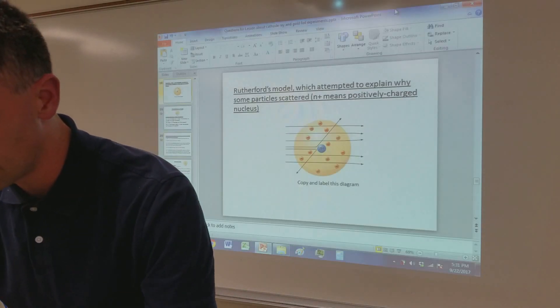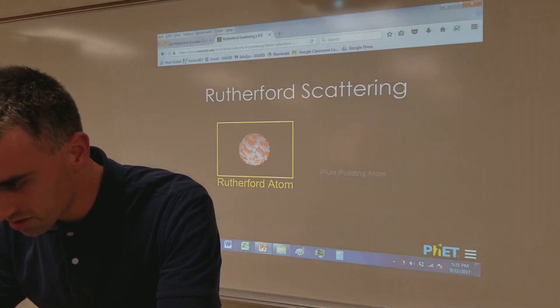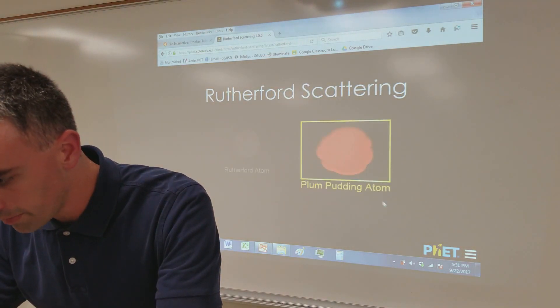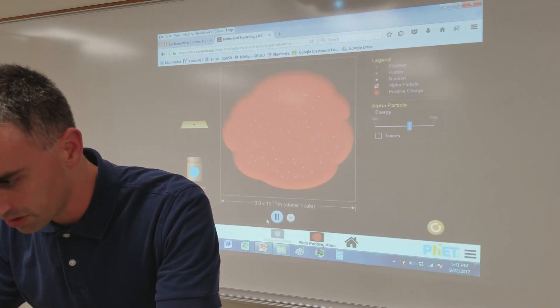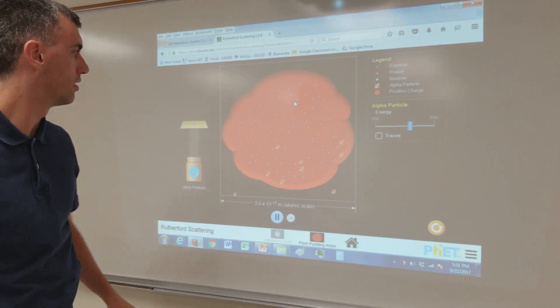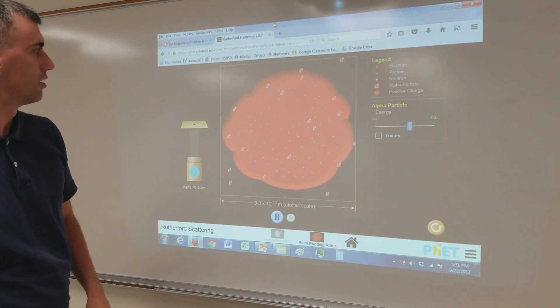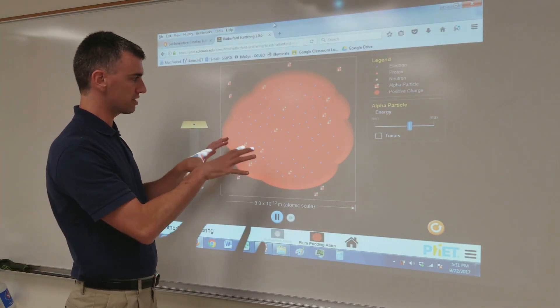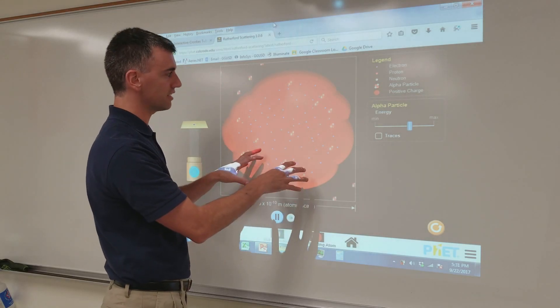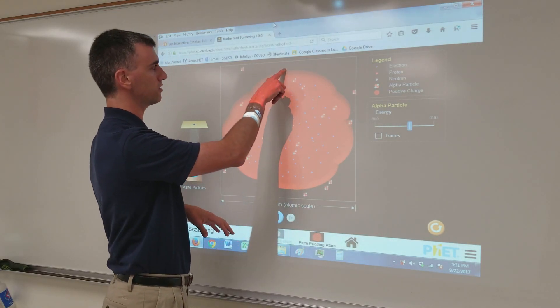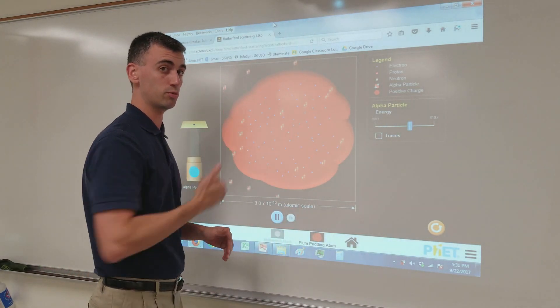So, another way to look at that is with animation. So, let's pull up an animate thing. Let me show you what he was expecting to see first. Okay, this is what he was expecting. If there was no nucleus, there'd be nothing for these alpha particles to bump into. They'd just sail straight through the middle of the atom.